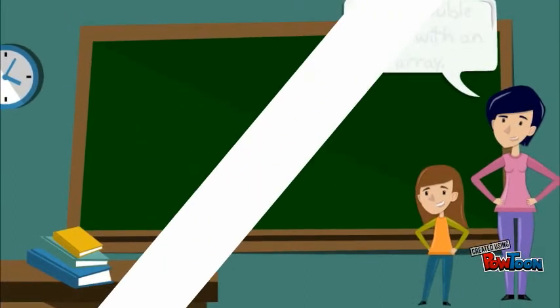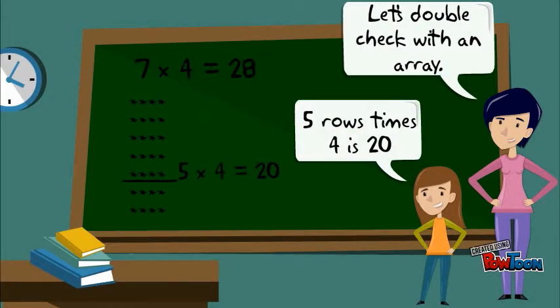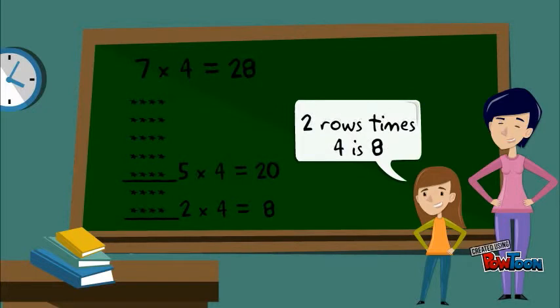Let's double check with an array. 5 rows times 4 is 20. 2 rows times 4 is 8. 20 plus 8 is 28. So, 7 times 4 is 28.